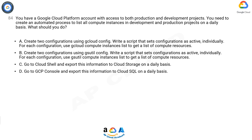B. Create two configurations using gcloud config. Write a script that sets configurations as active, individually. For each configuration, use gcloud compute instances list to get a list of compute resources.